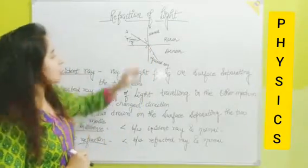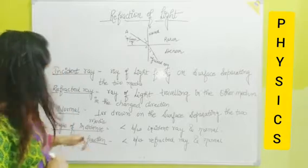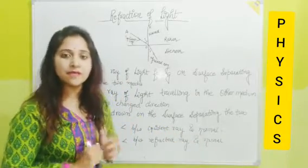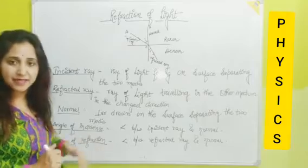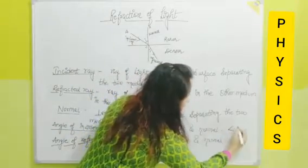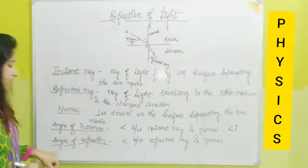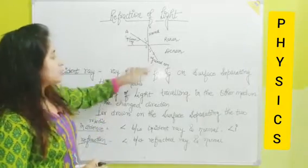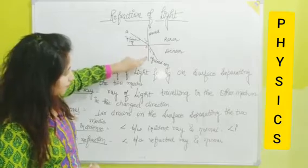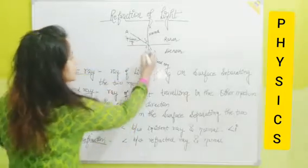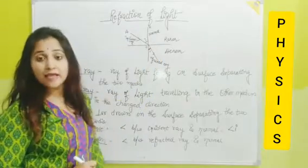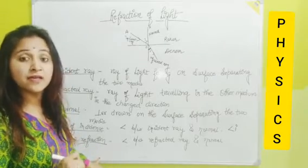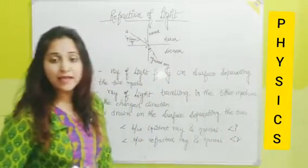The angle created between the Incident Ray and the Normal is called the Angle of Incidence, and it is denoted by angle i. The angle between the Refracted Ray and the Normal is called the Angle of Refraction. This angle is known as the Angle of Refraction, and it is denoted by the symbol angle r.